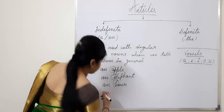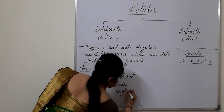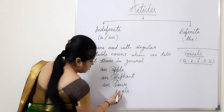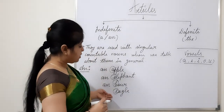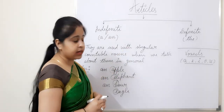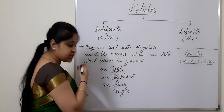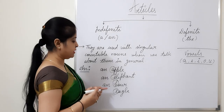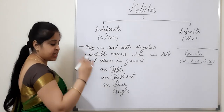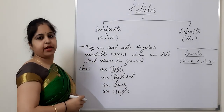Another example: 'Eagle'. Eagle is beginning with E, which is a vowel. When we pronounce this word — Eagle — it has the sound of E. So undoubtedly we will be putting 'an' before it: an eagle.